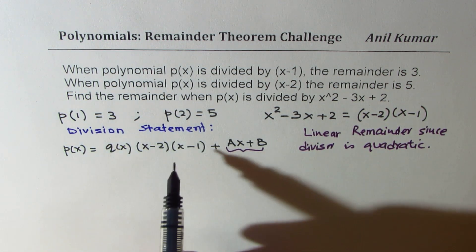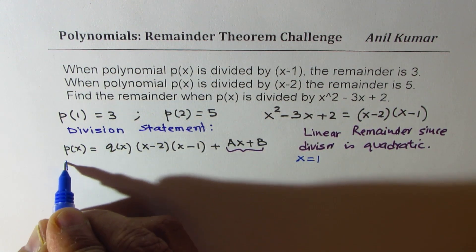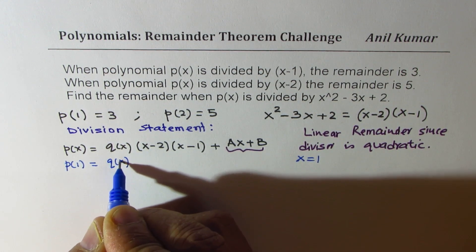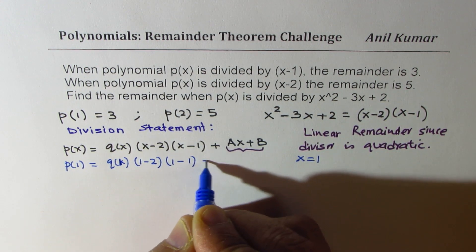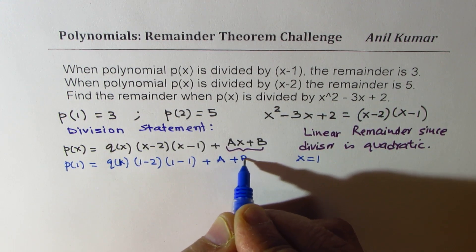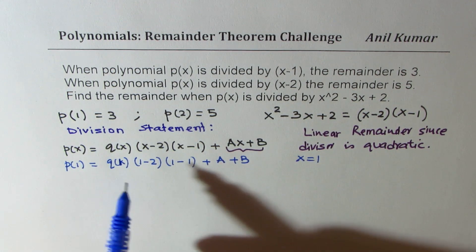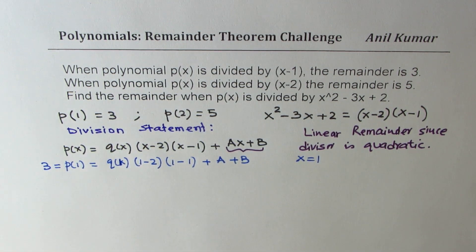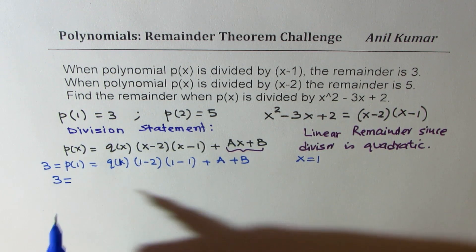Now what happens if I substitute x = 1? So if I substitute x = 1, I get p(1) as equal to q(1)(1-2)(1-1) + A + B. And we know p(1) is 3. So we could write 3 equals all this. Now 1 - 1 is 0, so we get our equation A + B = 3.